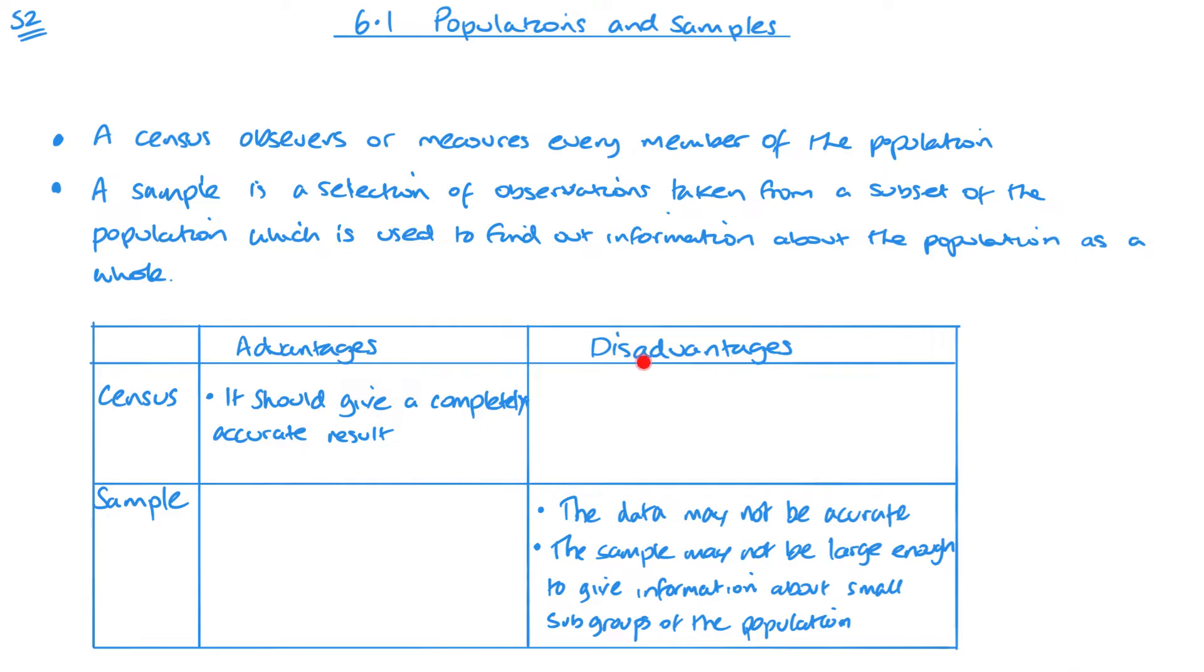Now let's think of the disadvantages of a census. The disadvantages are time consuming and expensive. Cannot be used if the testing process destroys an item. So if I was a manufacturer and I was manufacturing, I don't know, how long a light bulb will last, how many times I can switch it on and off until it breaks, I couldn't use a census because if I use a census it means I test every light bulb and I'd have none to sell. So I'd have to use a sample. And then the final disadvantage is processing that large quantity of data. If I do a census, I collect so much data I might not be able to process it all.